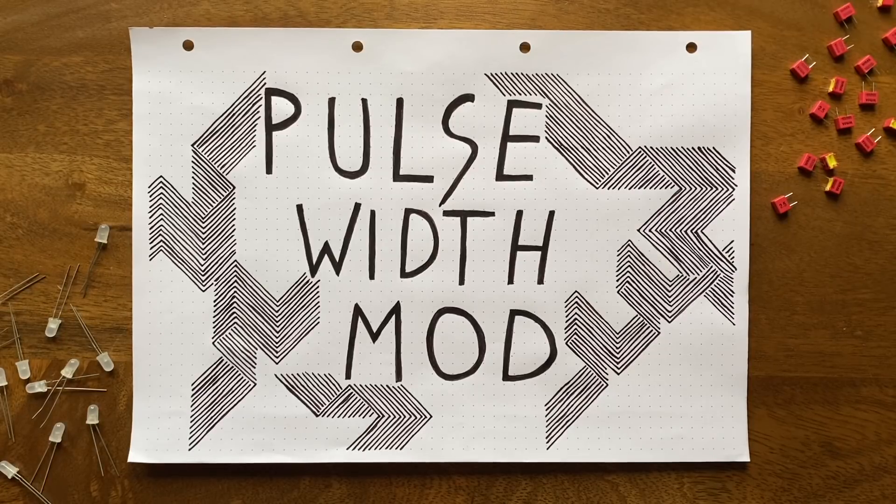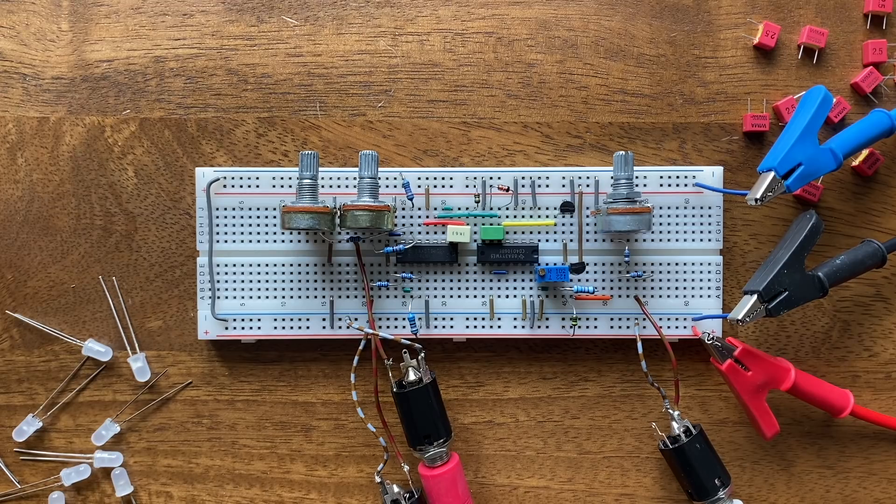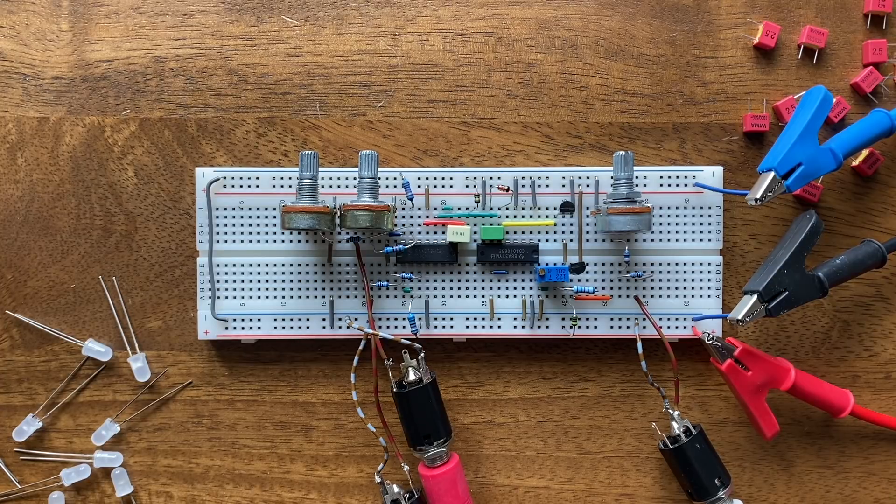A while back, I decided to design my own VCO and make a video series about it detailing the process. And while most of the functionality I've implemented is working fine, it's been bothering me that there is no option for controlling the pulse wave's width with a voltage. It could only be done manually in the original design. So in this video, we'll change that and fix a rather annoying bug while we're at it. If you're curious how that might sound in the end, here's a quick demo.